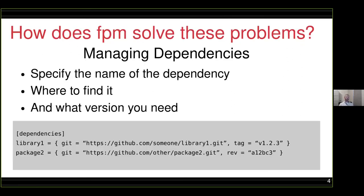So how does FPM try and solve these problems? For managing dependencies, there are only a few things that really should be necessary from a user perspective: the name of the dependency you need, where you find it, and what version you want. Managing dependencies in FPM is basically as simple as listing them in the configuration file — a TOML-formatted file — with a name, where to find it, and optionally some way of specifying a version.